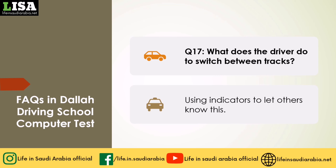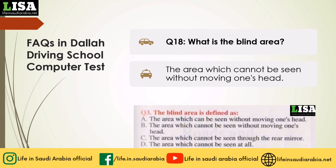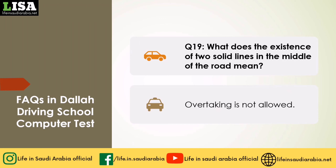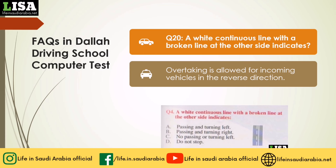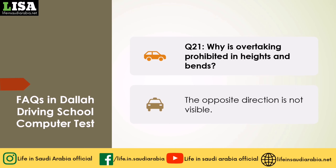Q17: What does the driver do to switch between tracks? Answer: Using indicators to let others know. Q18: What is the blind area? Answer: The area which cannot be seen without moving one's head. Q19: What does the existence of two solid lines in the middle of the road mean? Answer: Overtaking is not allowed. Q20: A white continuous line with a broken line at the other side indicates? Answer: Overtaking is allowed for incoming vehicles in the reverse direction. Q21: Why is overtaking prohibited in heights and bends? Answer: The opposite direction is not visible.